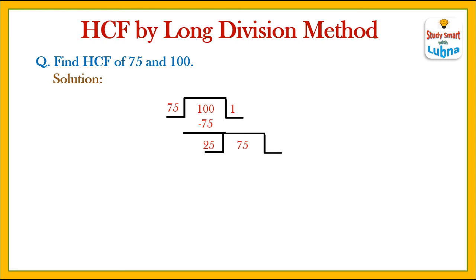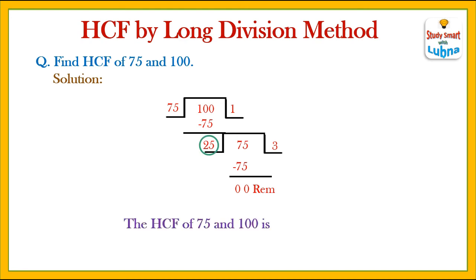25 threes are 75, so the remainder is 0. We continue this process until the remainder is 0. The last divisor is the HCF of 75 and 100, which is 25.